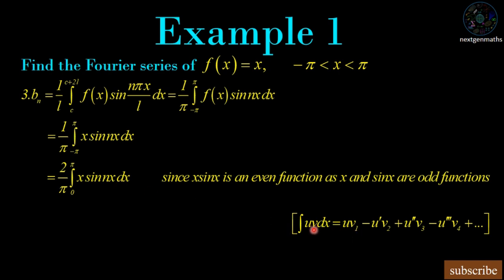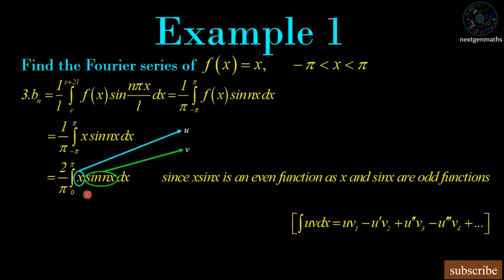We apply integration by parts: ∫u·v dx = u·v₁ − u′·v₂ + u″·v₃ − u‴·v₄, where v₁, v₂, v₃, v₄ are the successive integrations of v — that is, v₁ is the integral of v, v₂ is the integral of v₁, v₃ is the integral of v₂, and v₄ is the integral of v₃.